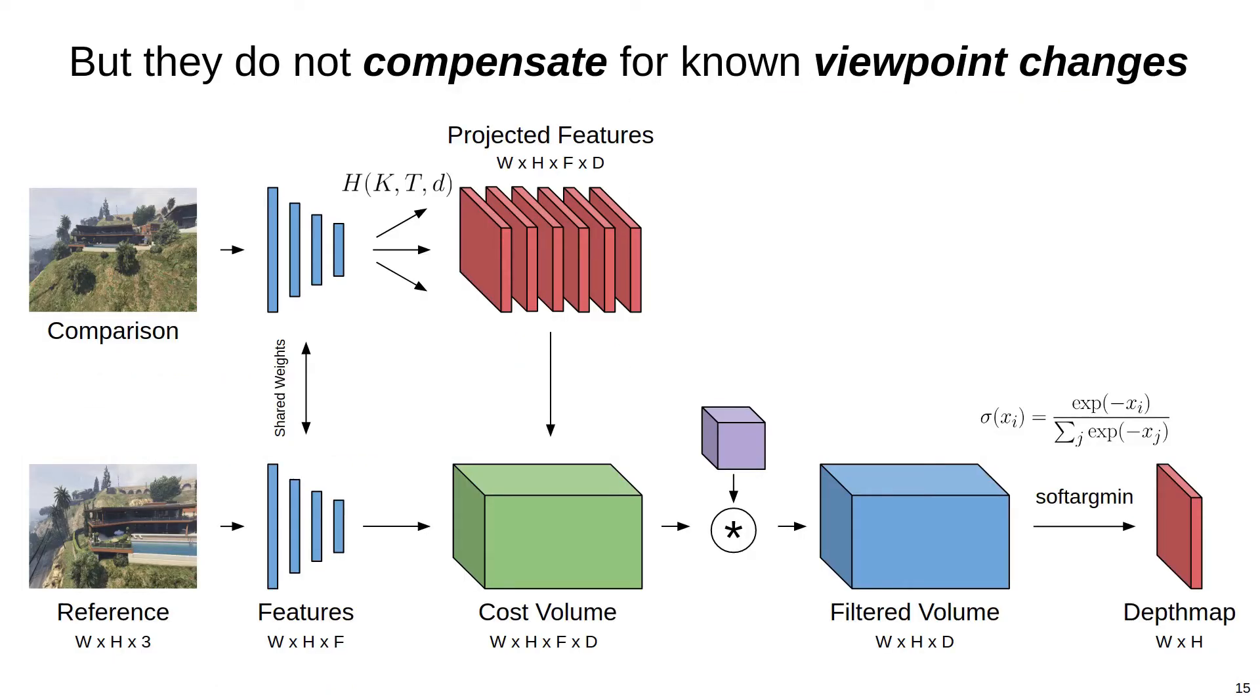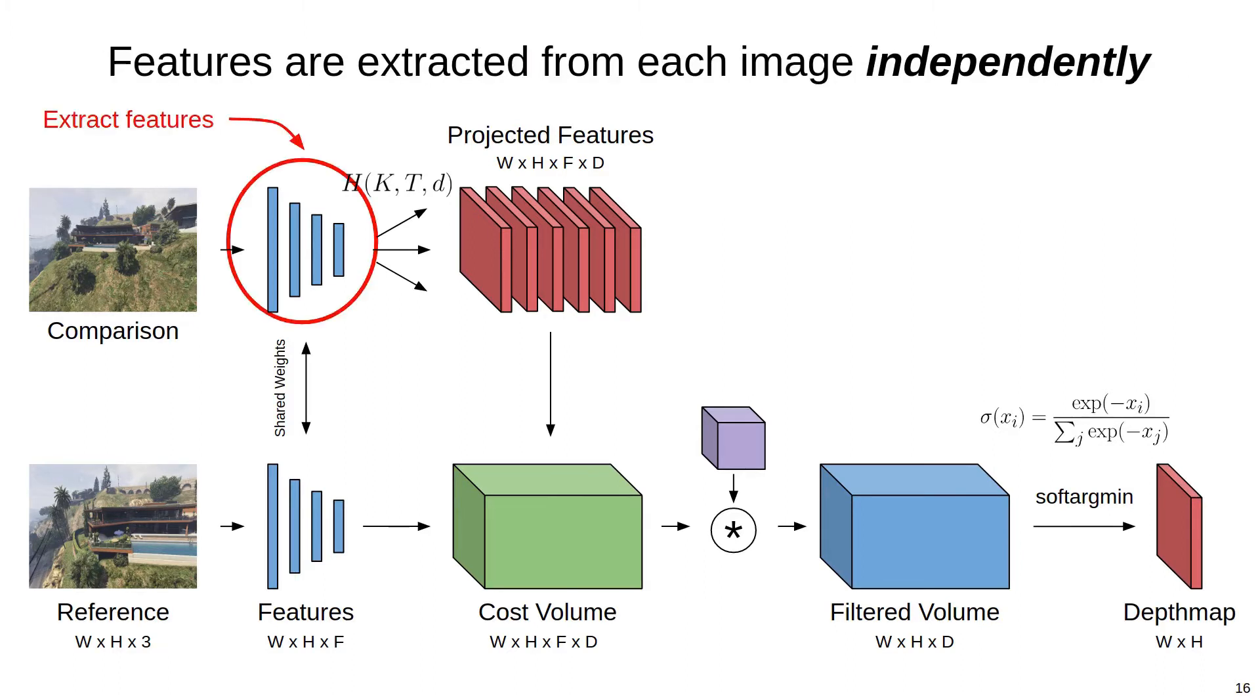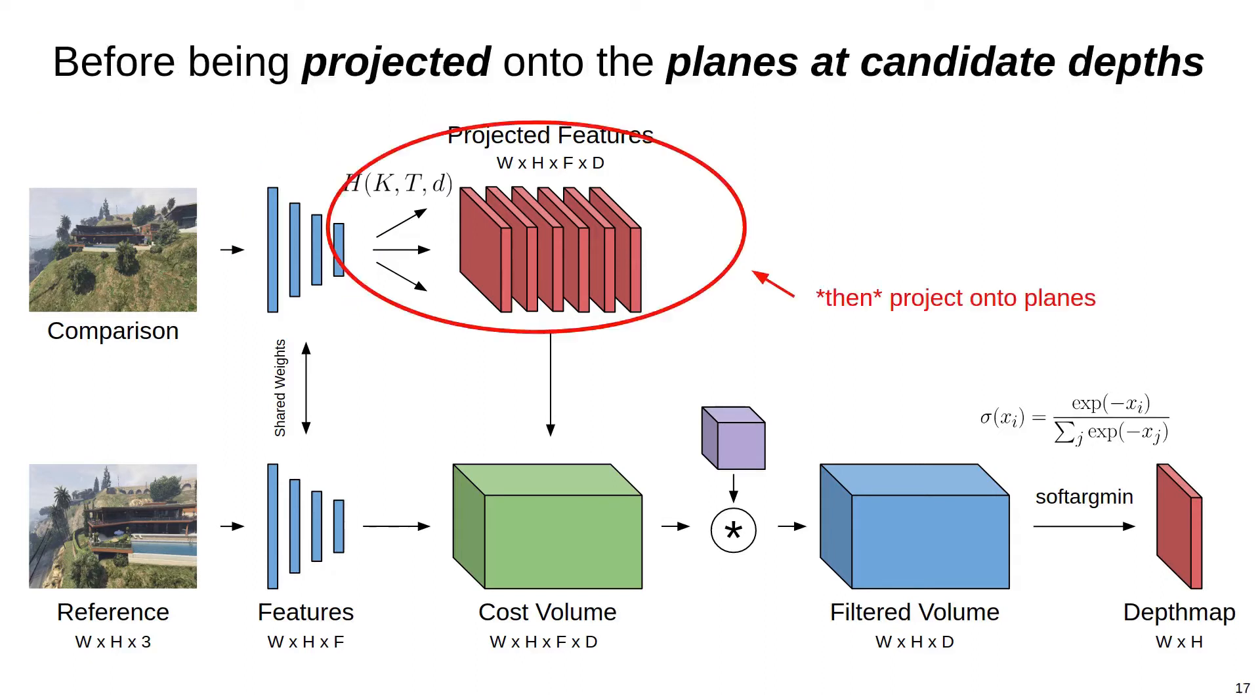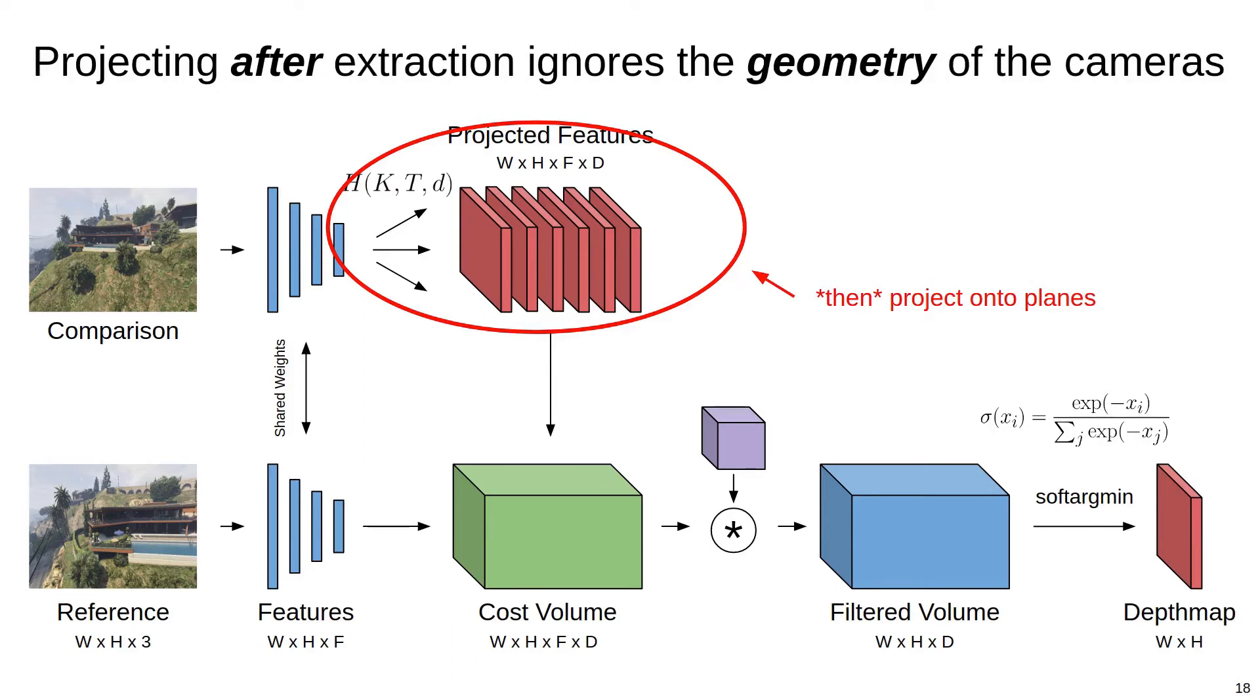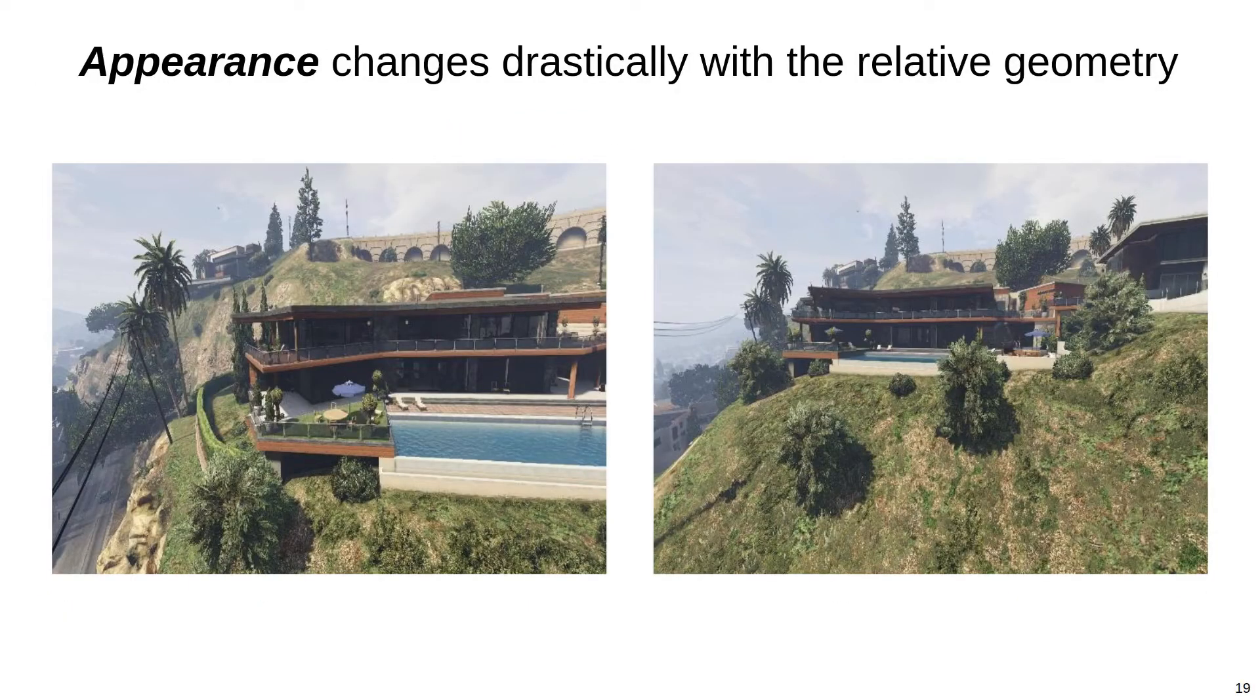In particular, the feature extraction sub-networks in these learned MVS approaches do not compensate for the known viewpoint changes when computing features and establishing pixel correspondences. By that, I mean that in the forward pass of the network, features are first extracted from each image independently, and then projected onto the planes in the reference frame. Applying the projection after extraction means that the feature network does not consider the relative geometry of the cameras, which is bad because objects can appear dramatically different when observed from different viewpoints.